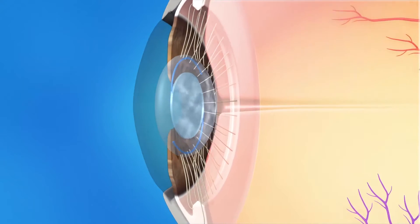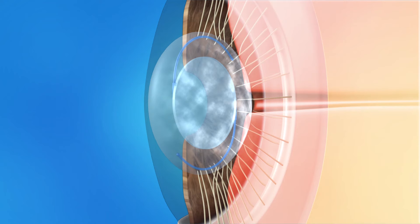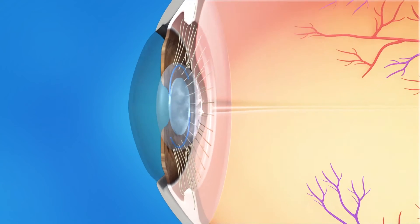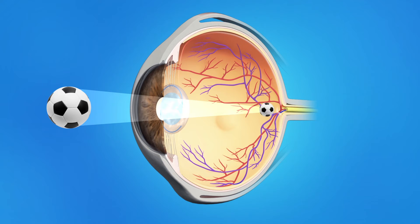With YAG laser capsulotomy, your ophthalmologist will use a laser to create an opening in the back of your eye's cloudy lens capsule. Light can then pass through the lens and focus properly on the retina, allowing you to see clearly again.